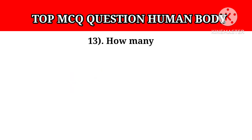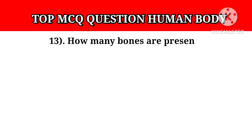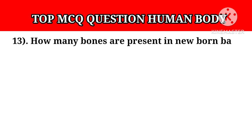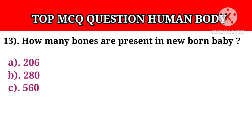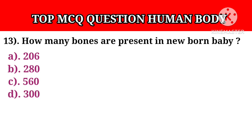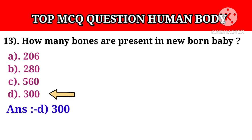Question number 13: How many bones are present in a newborn baby? Option A: 206. Option B: 280. Option C: 560. Option D: 300. Answer D: 300.